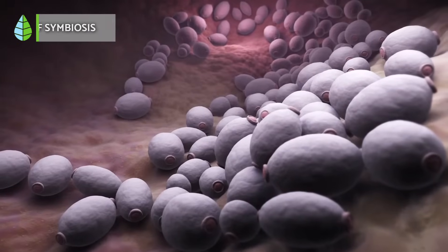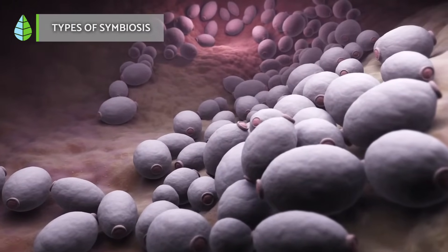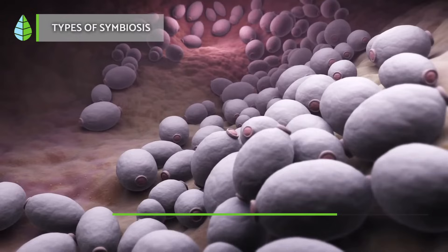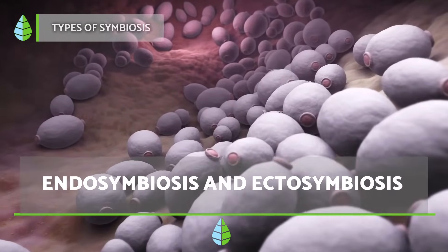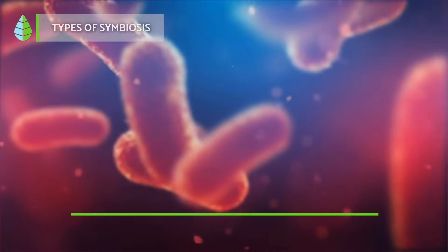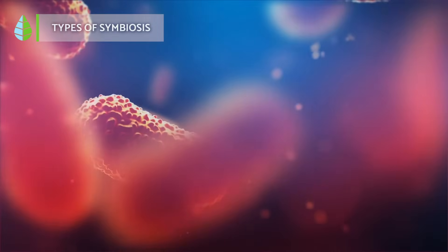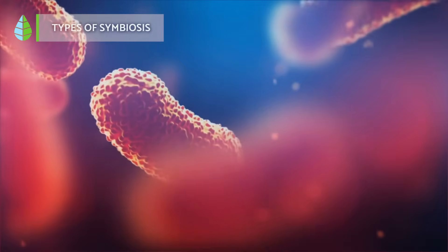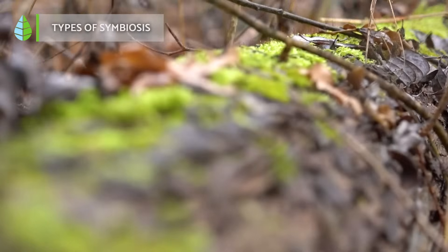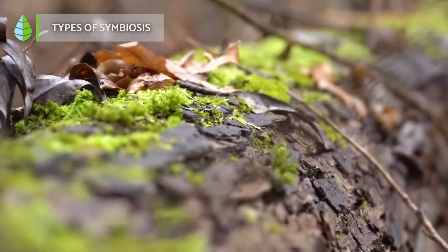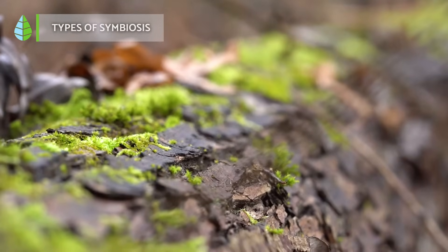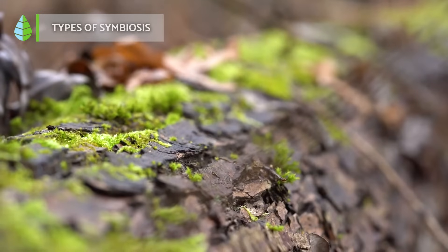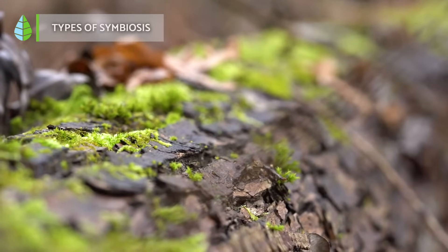Depending on whether one of the symbionts lives inside the other or not, they can be classified into endosymbiosis or ectosymbiosis. It's endosymbiosis if the organism lives inside the cells of the other symbiont or in the gaps between them. On the other hand, it is ectosymbiosis if the symbiont survives on the outside of the host cells — for example, on the surface of the digestive tract, exocrine glands, or externally on their body.